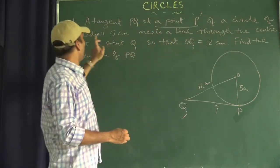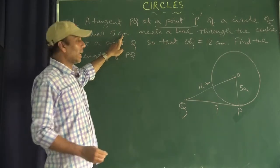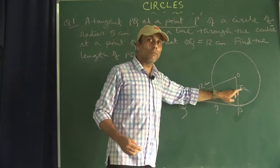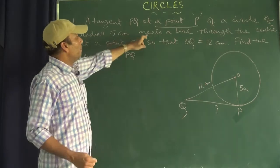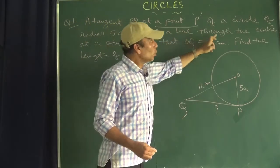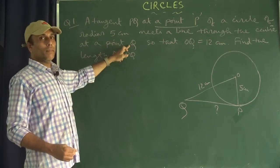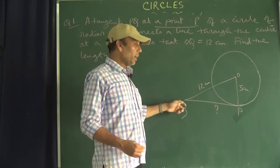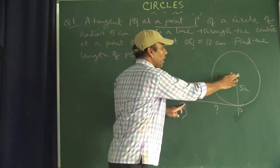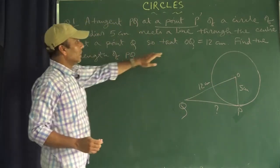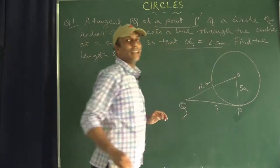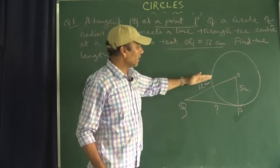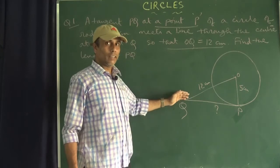The circle has radius 5 cm, so OP is the radius and its length is 5 cm. The line meets through the centre at point Q, so joining O and Q gives us OQ equal to 12 cm. We are given the length of the radius and the length OQ.